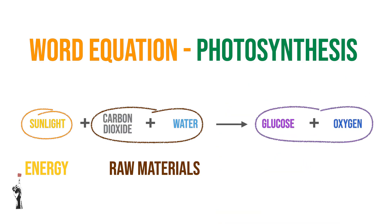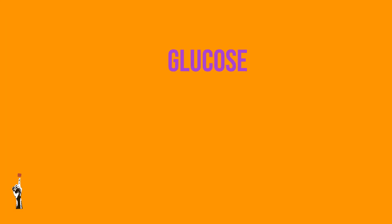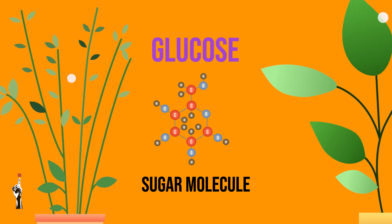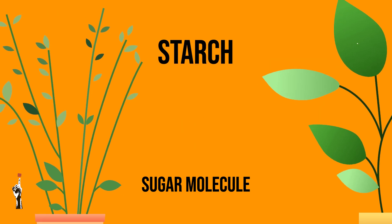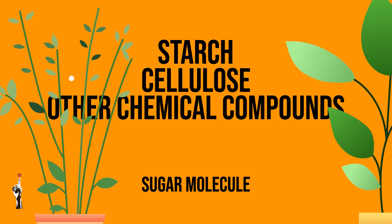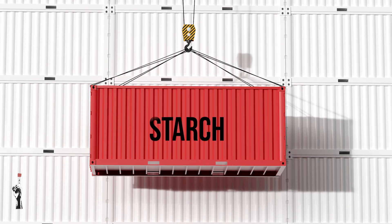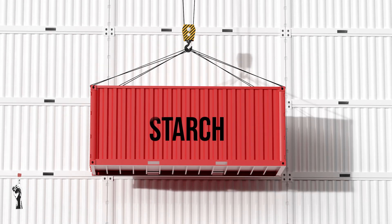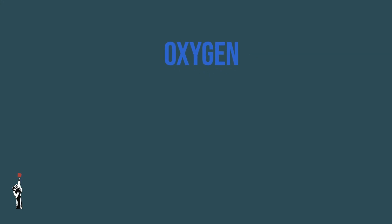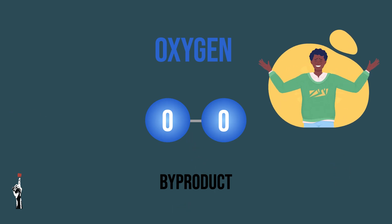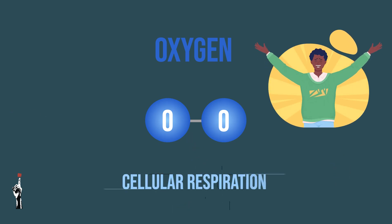The products in this equation include glucose, a sugar molecule produced as a result of photosynthesis. Plants can change the glucose into starch, cellulose, and other chemical compounds to enable processes such as growth and reproduction. Starch can also be stored for later use by the plant itself or by animals eating the plants. Oxygen is released as a byproduct of the reaction and is vital for the survival of many organisms, including humans, because it is used during cellular respiration.